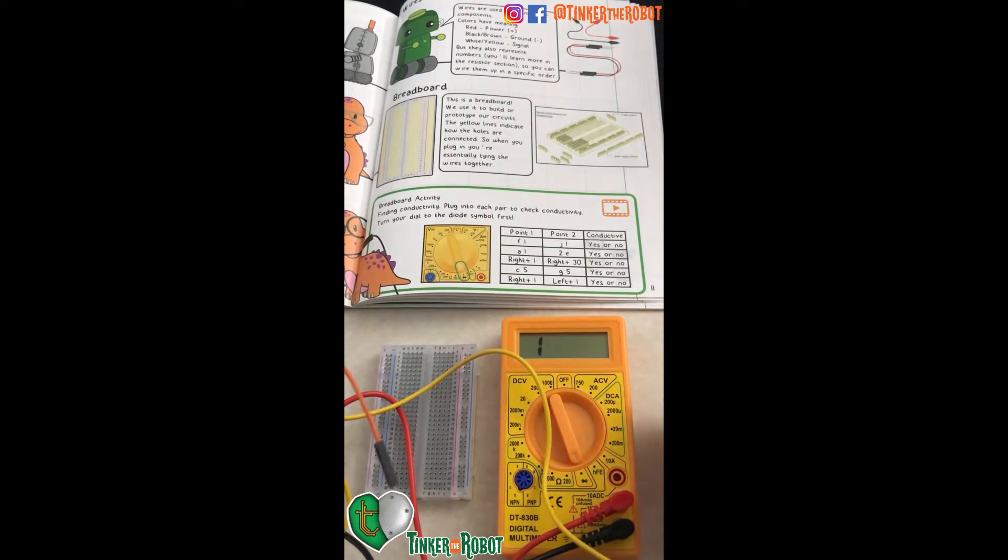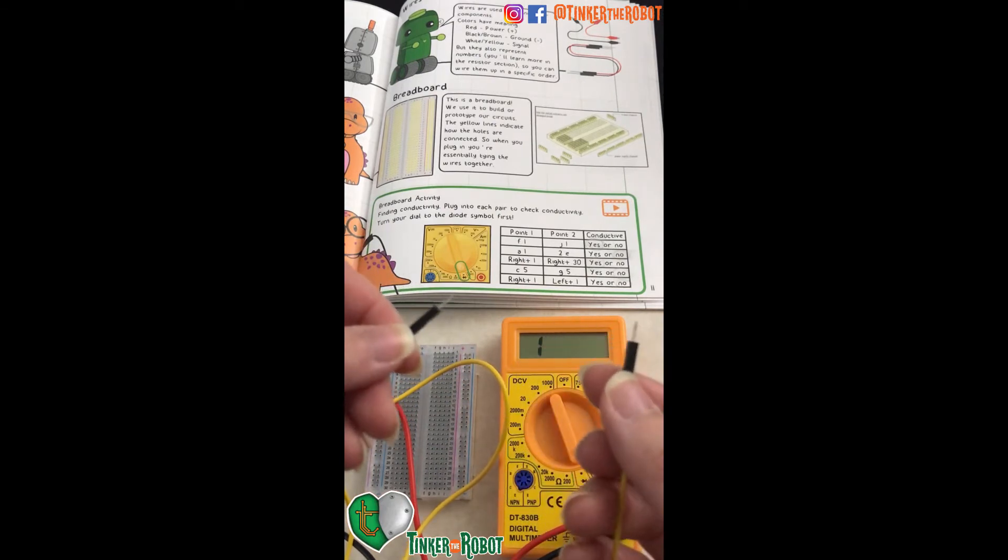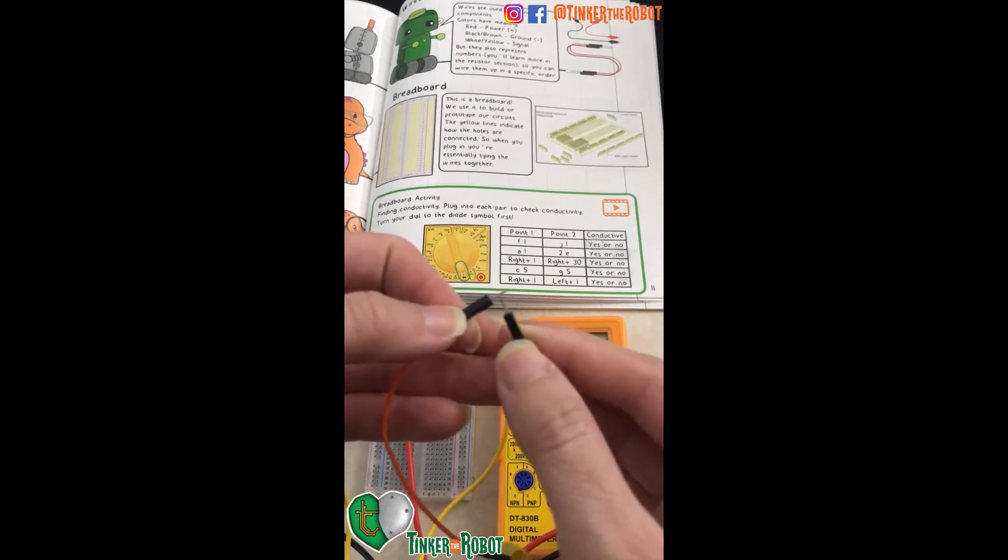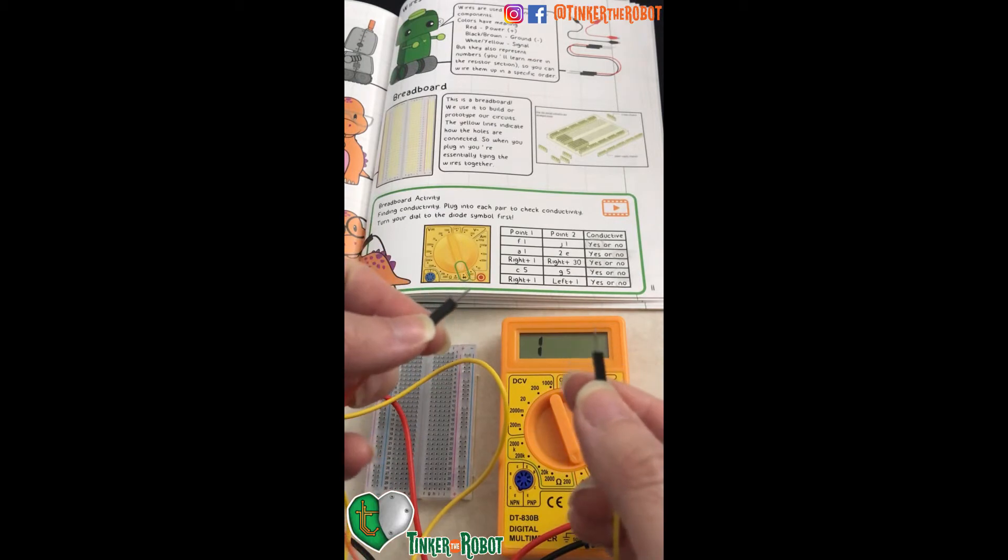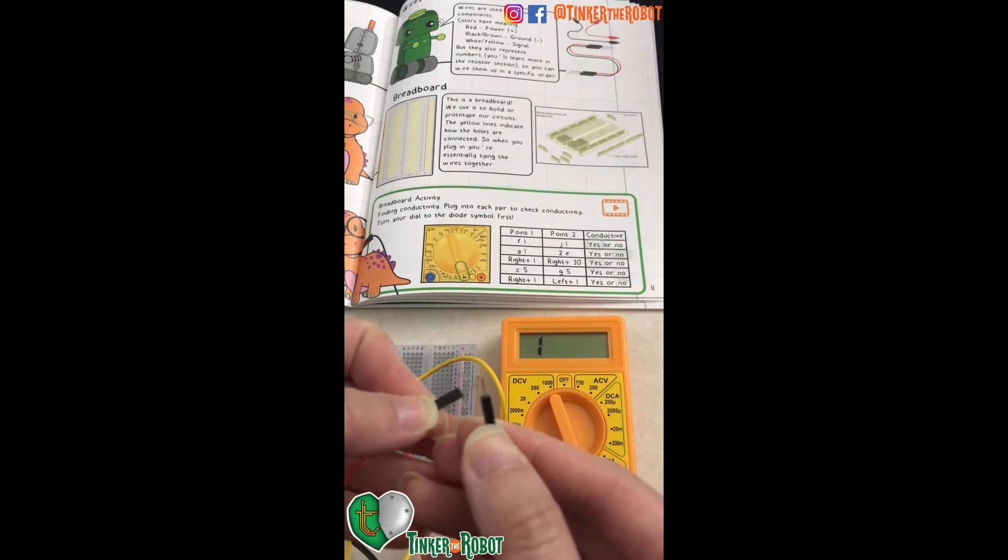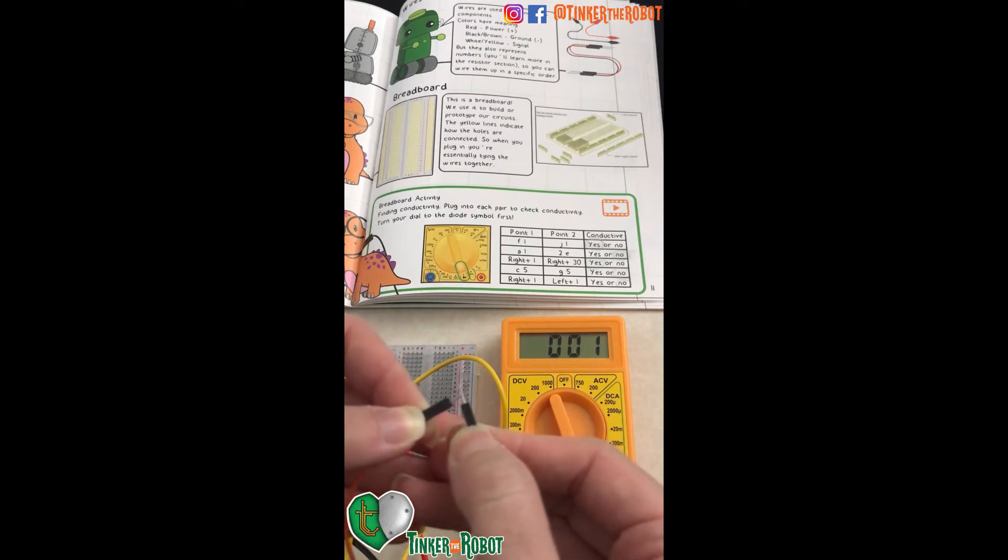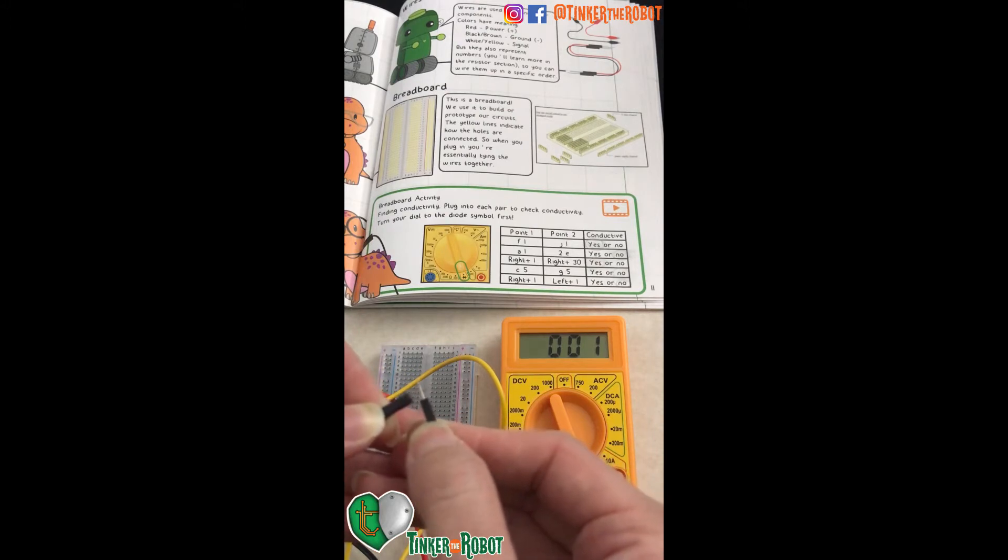So one thing about being in diode mode is that it allows us to see if a circuit is open or closed. It's essentially a continuity check or conductivity. So you see if we're touching, our number drops. It's almost close to zero, which means that it's very conductive and that there is almost zero resistance there. And so you can see as I move it along, the number actually changes so it indicates how much resistance is present.